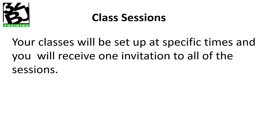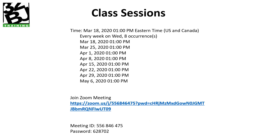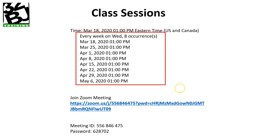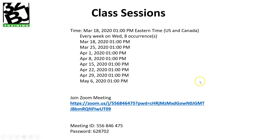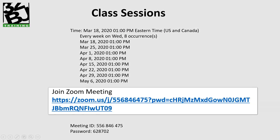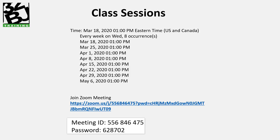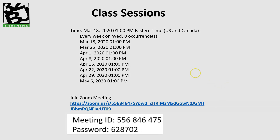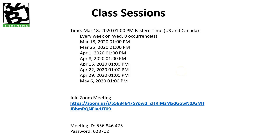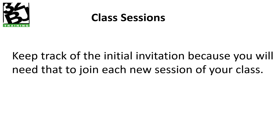Your class sessions will be set up at specific times and you'll receive one invitation to all of those sessions and it will look something like this. You'll see all the different dates. The times are the same — 1 p.m. — and it'll be the same day of the week. Every session will be listed and the one link here will work for every one of those sessions. You also want to take note of the meeting ID and password. There may come a time where it will ask you to enter either one of those things. The link should work on its own, but just in case, know where you can find the ID and password. Keep track of that initial invitation because you'll need it to join each new session of your class.